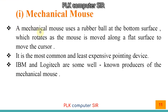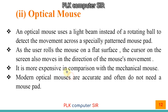A mechanical mouse uses a rubber ball at the bottom surface which rotates as the mouse is moved along a flat surface to move the cursor. It is the most common and least expensive pointing device. IBM and Logitech are some well-known producers of the mechanical mouse. Previously it was widely used, but nowadays most people use the optical mouse.